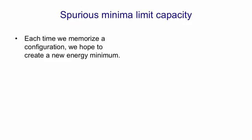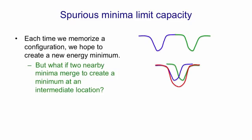If we ask what limits the capacity of a Hopfield net — what causes it to break down — it's merging of energy minima. Each time we memorise a binary configuration, we hope that we'll create a new energy minimum. We might have our state space depicted horizontally and energy depicted vertically, with one energy minimum for the blue pattern and another for the green pattern. But if those two patterns are nearby, we won't get two separate minima. They'll merge to create one minimum at an intermediate location, meaning we can't distinguish those two separate memories and will recall a blend of them rather than the individual memories. That's what limits the capacity of a Hopfield net.